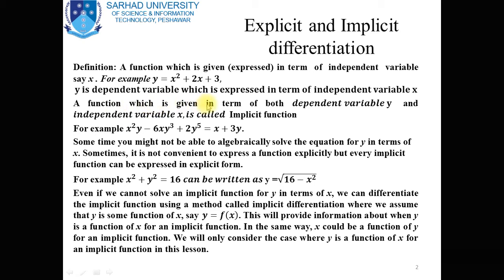A function given in terms of both dependent variable y and independent variable x is called an implicit function. For example, x²·y − 6y³ − 6xy³ + 2y⁵ = x + 3y is an implicit function. A function in which the range term y is not expressed in terms of the domain is called an implicit function.